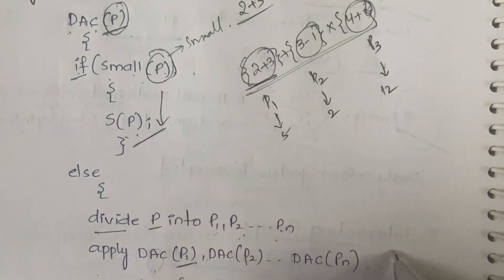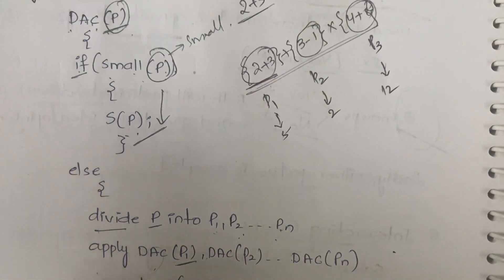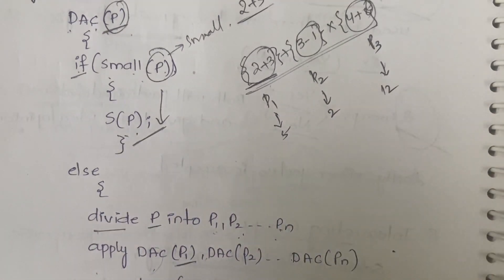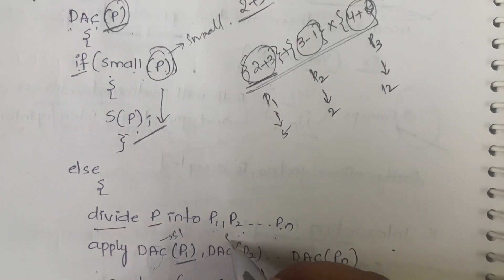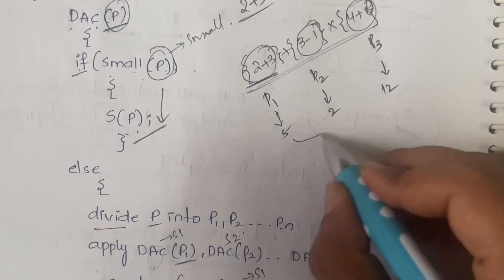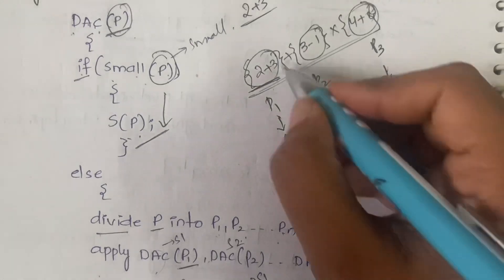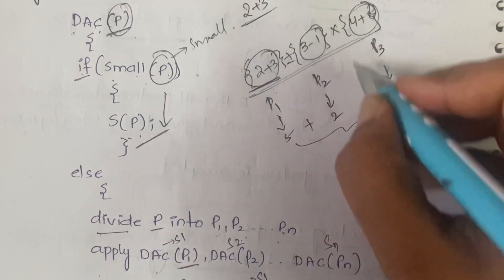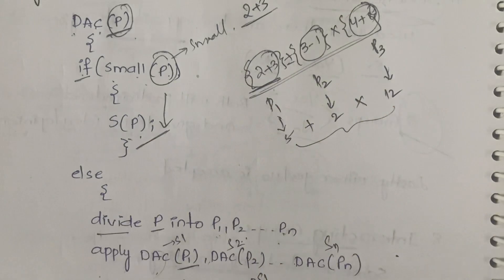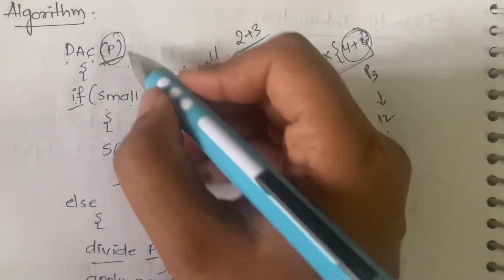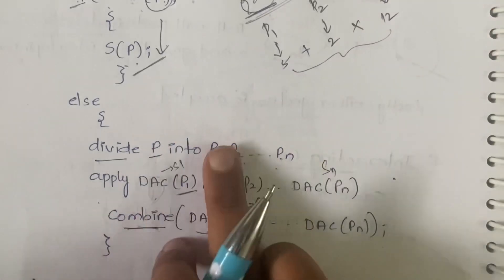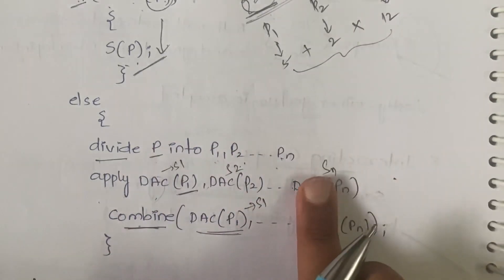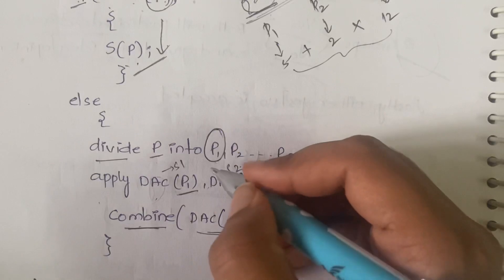Finally you combine the results. DAC(P1) gives S1, DAC(P2) gives S2, up to Sn. You combine all these outputs using the appropriate combining operator — here we have addition and multiplication. So the summary: if the problem is very small, find the solution directly; if it is bigger, divide into sub-problems, apply divide and conquer on each, then combine all the solutions.